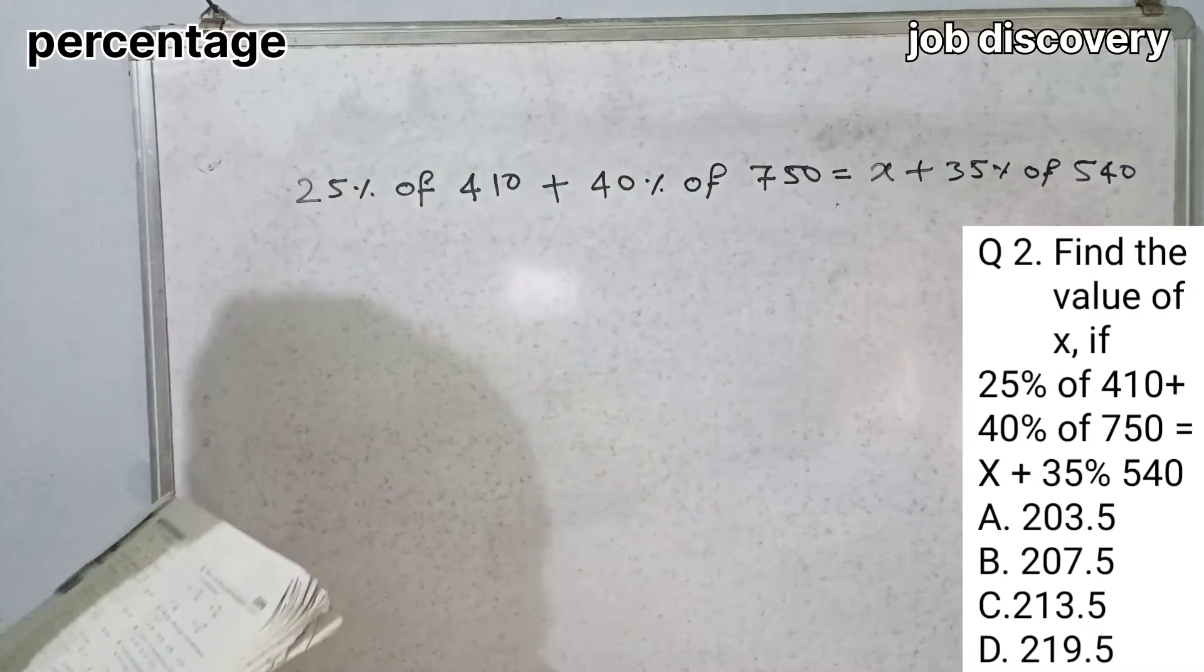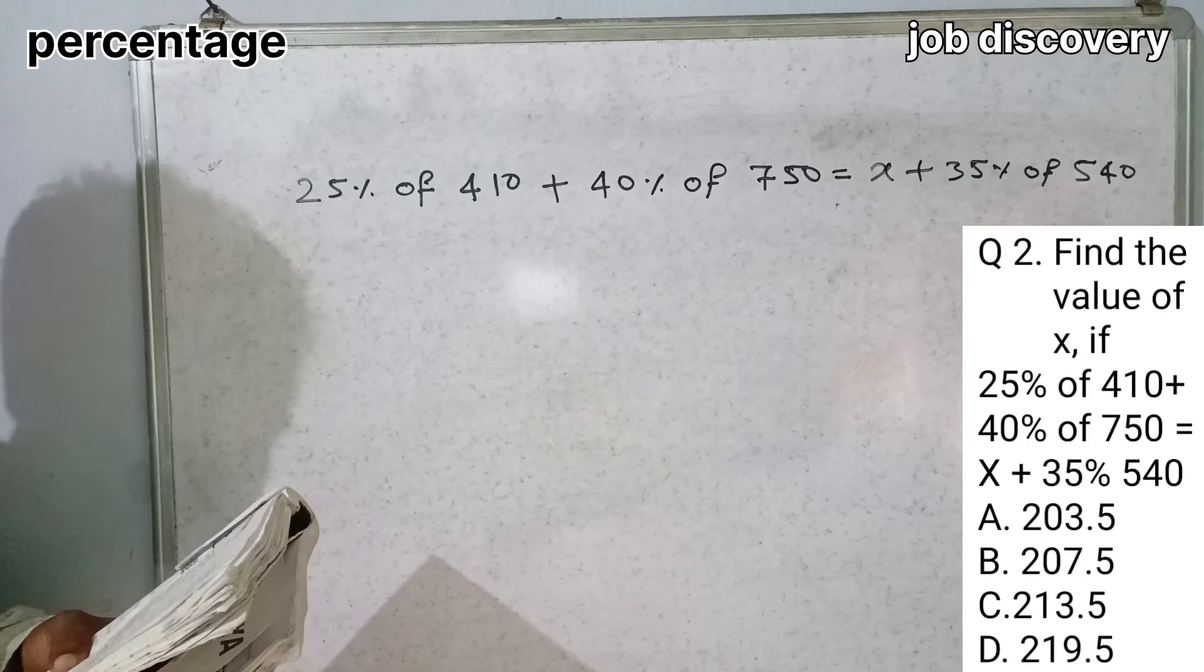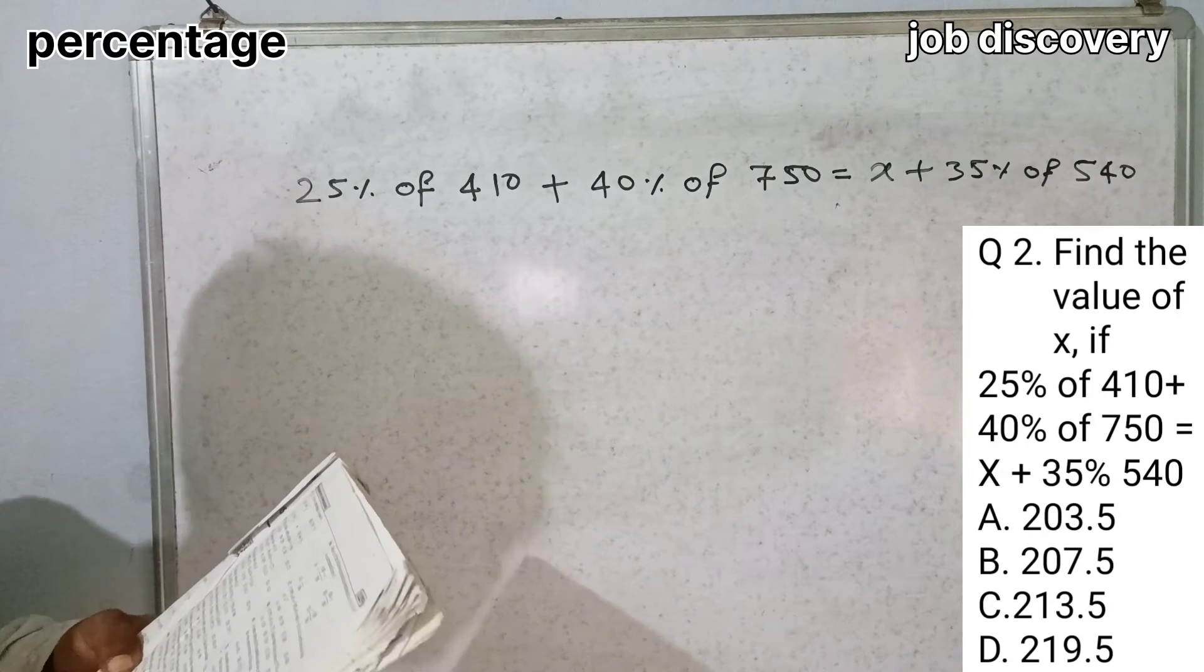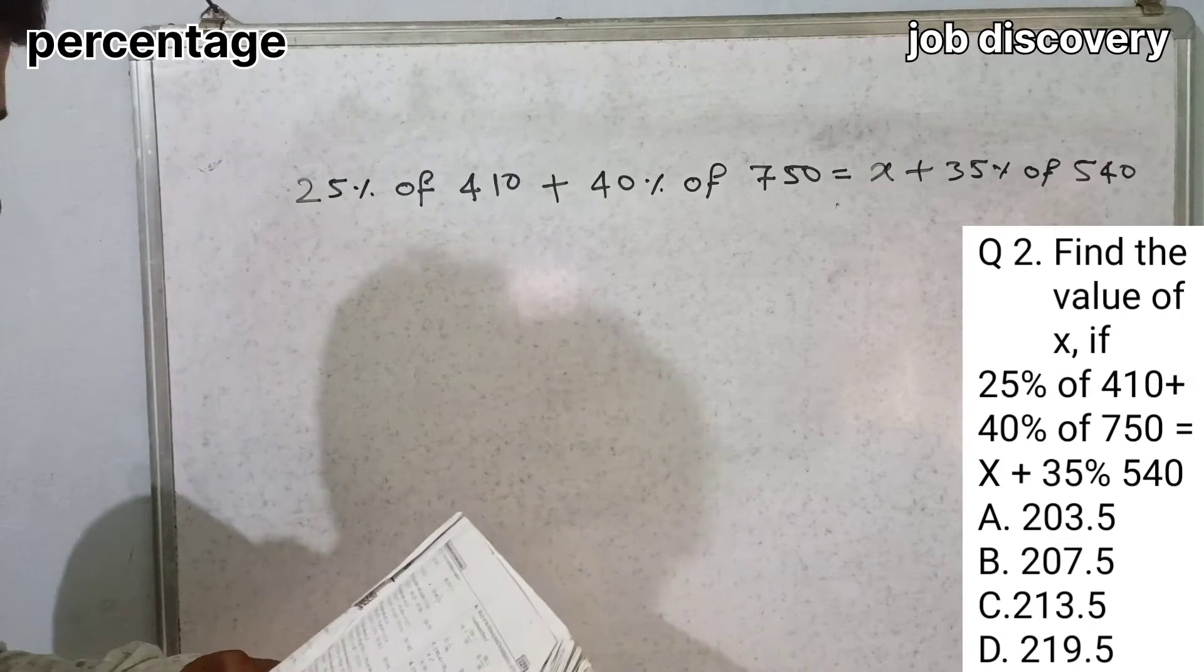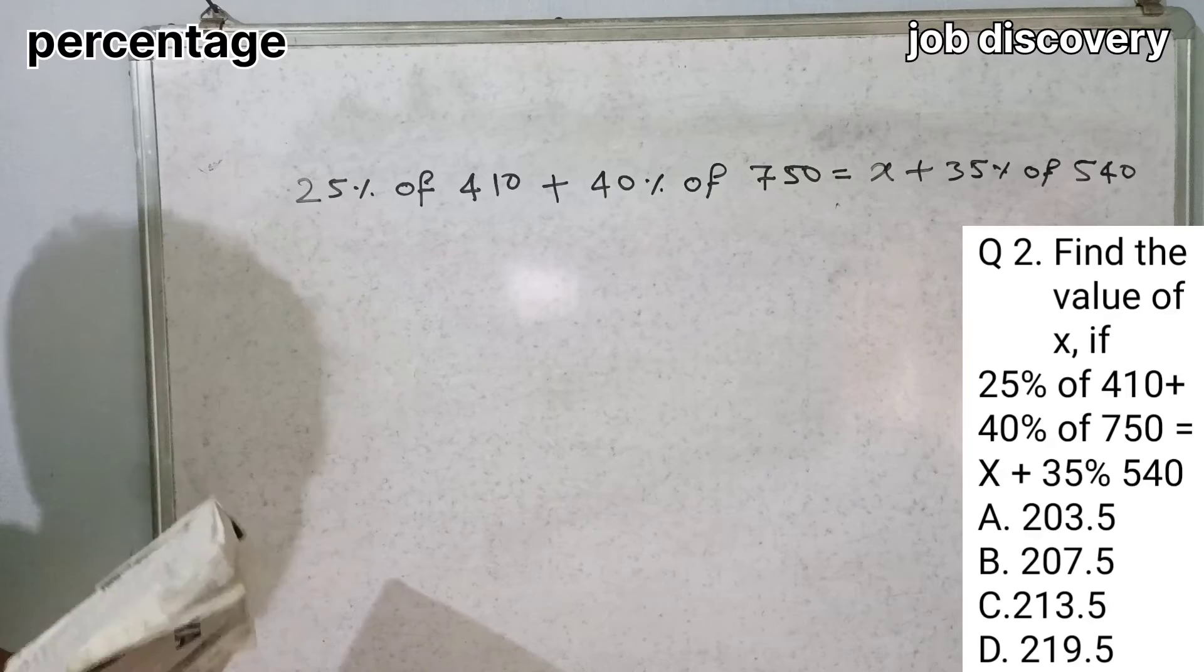We have 4 options. Option A is 203.5, Option B is 207.5, Option C is 213.5, Option D is 219.5.